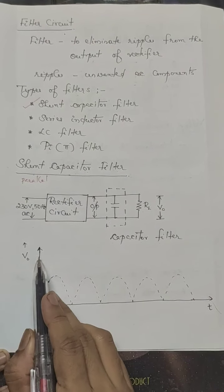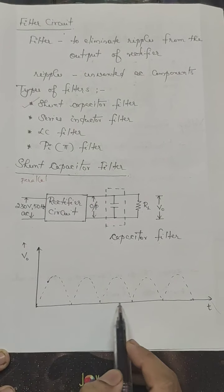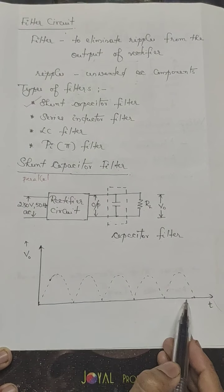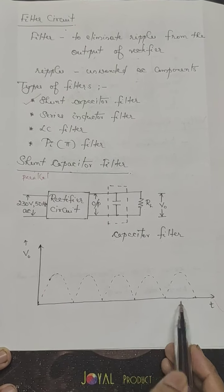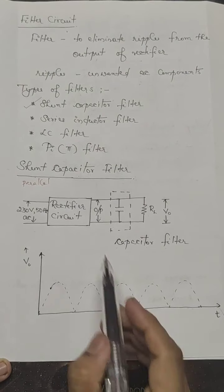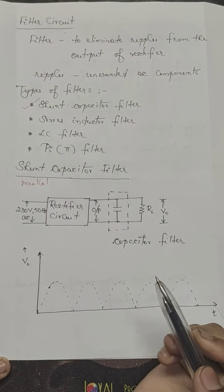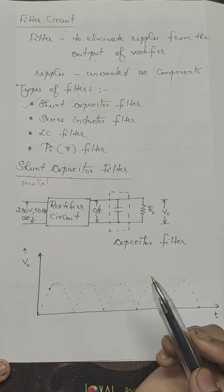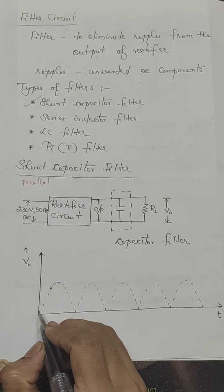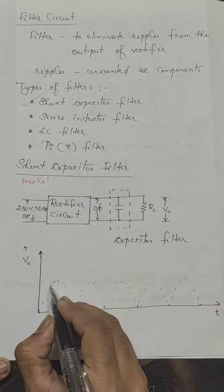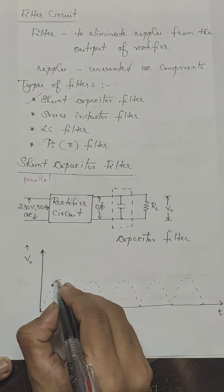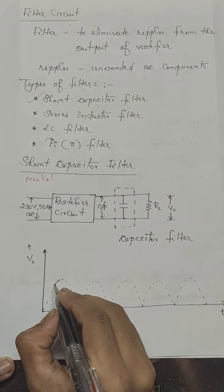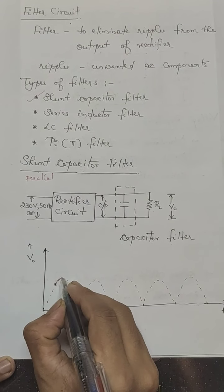We have already seen the output of a full wave bridge rectifier. It will be like this. This waveform shows the output of a full wave bridge rectifier which is fed to the filter circuit. When the output of the rectifier reaches a particular value, the capacitor starts charging. It charges to its maximum value.